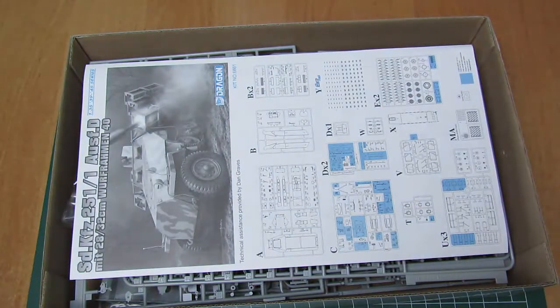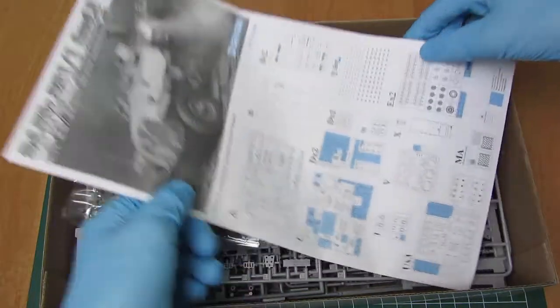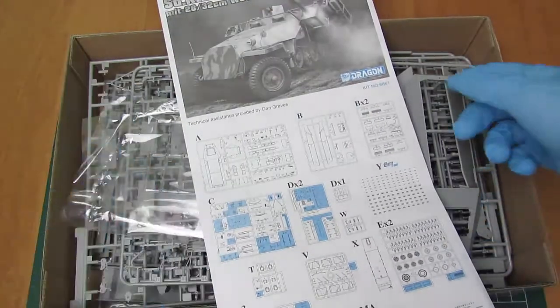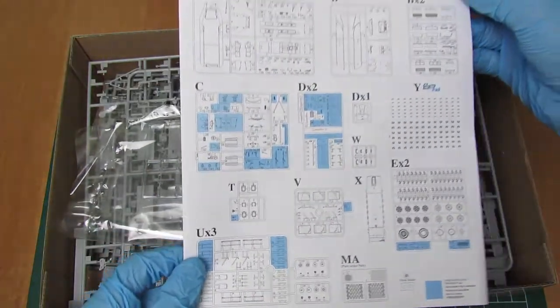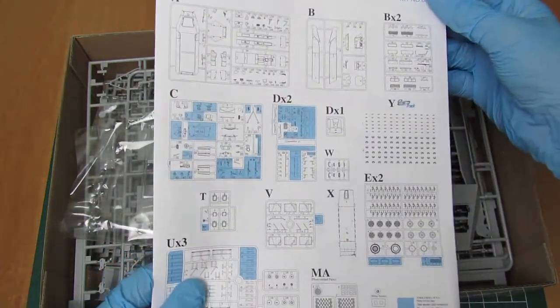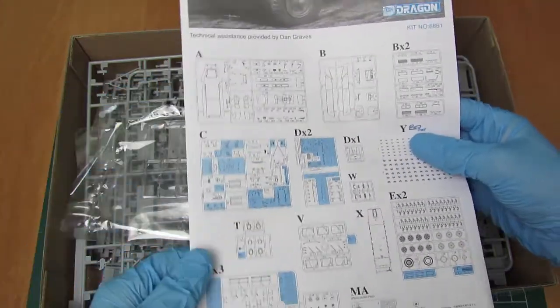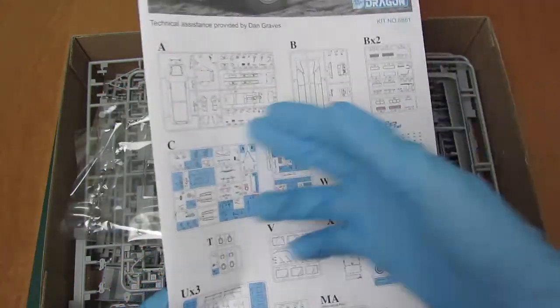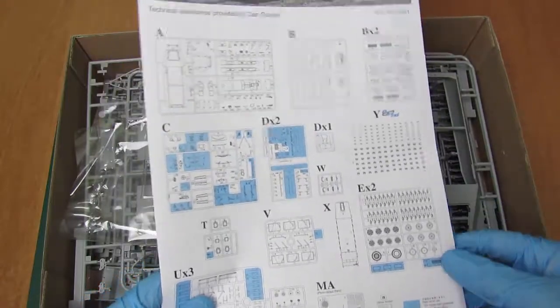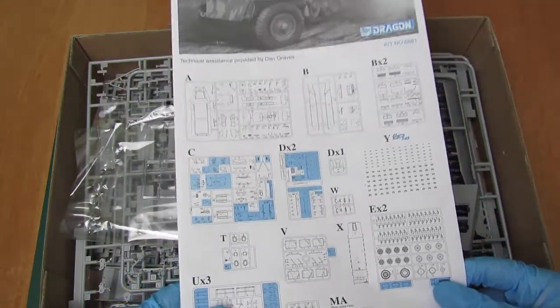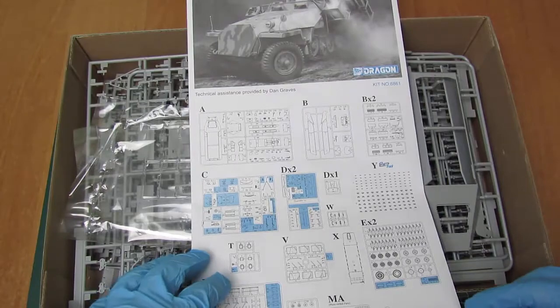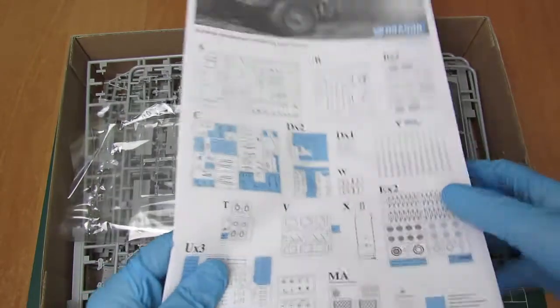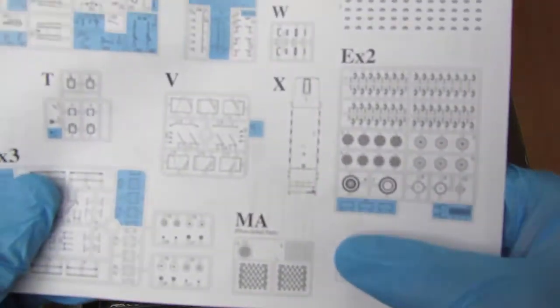Może lepiej przejdźmy już do samego wnętrza opakowania. Pierwsze co nam się ukazuje to instrukcja, która mówi już nam na samym początku ile tak naprawdę mamy ramek. Jest ich w dużej ilości, dużo elementów, nawet są elementy fotorawione.